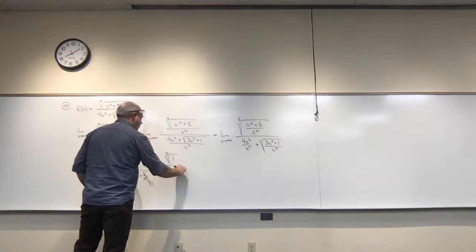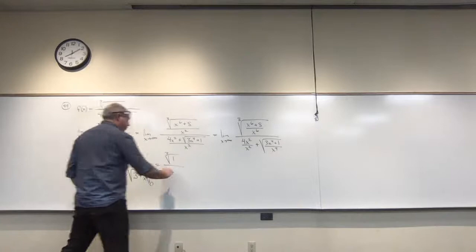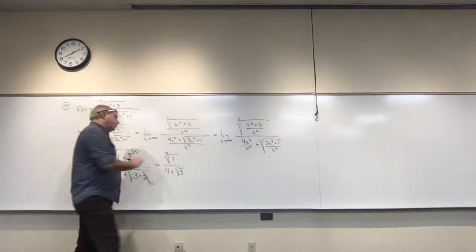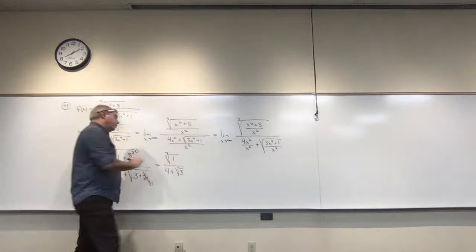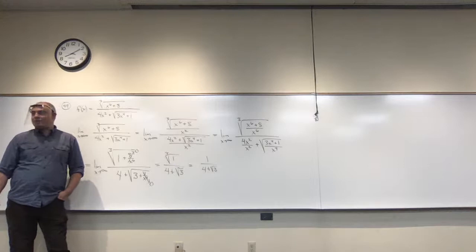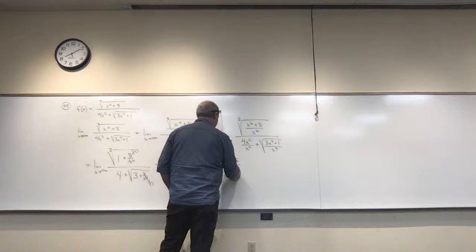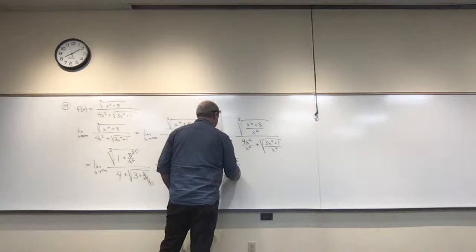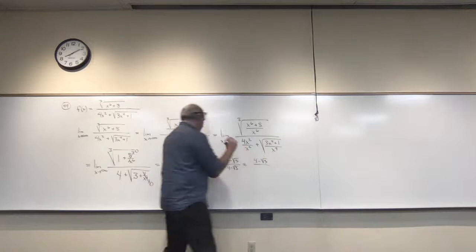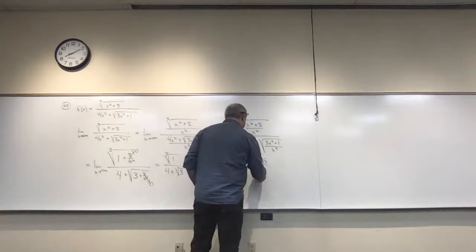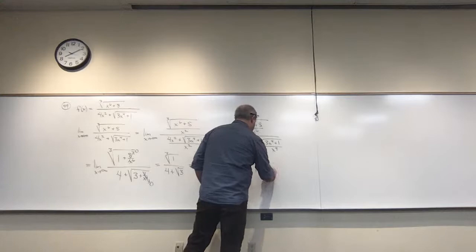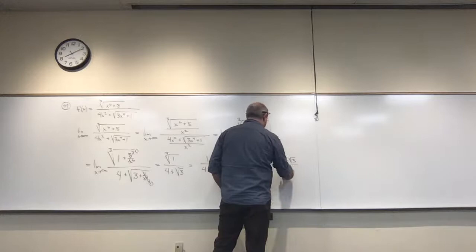As x gets big, 8 over a very big number goes to zero, and 1 over x to the fourth also goes to zero. We're left with the cube root of 1, divided by 4 plus the square root of 3, which is 1 over (4 + √3). If you want to rationalize the denominator, multiply top and bottom by (4 − √3) and you get (4 − √3) over 13.